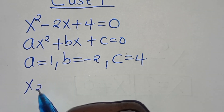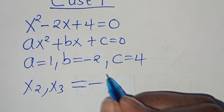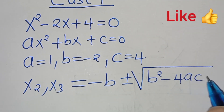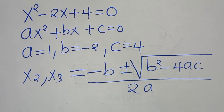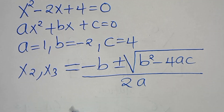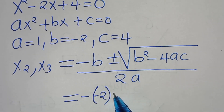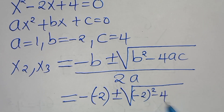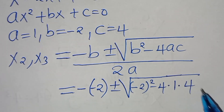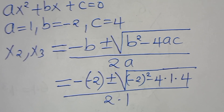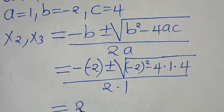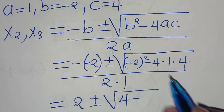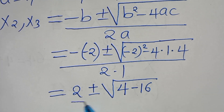For x₂ and x₃, we apply the quadratic formula: minus b plus or minus the square root of b squared minus 4ac, all divided by 2a. Substituting the values a equals 1, b equals minus 2, and c equals 4, this becomes minus minus 2 plus or minus the square root of minus 2 squared minus 4 times 1 times 4, all divided by 2 times 1.